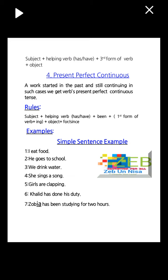Simple sentence examples: number one, I eat food. Number two, he goes to school. Number three, we drink water. Number four, she sings a song. Number five, girls are clapping. Number six, Khalid has done his duty. Number seven, Zobia has been studying for two hours.